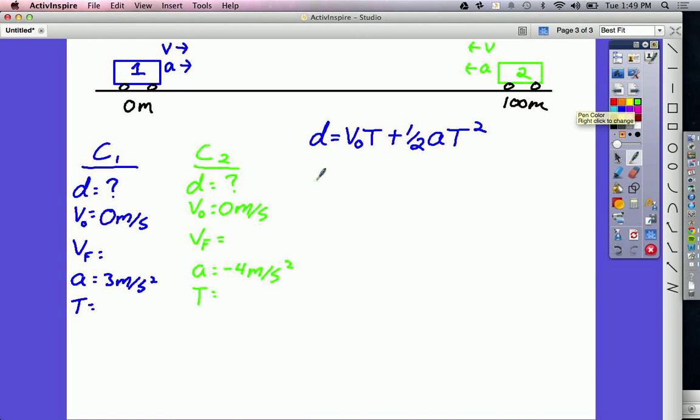And for car 2 is the exact same equation, only for the other car. Now, I'm using blue and green. You might want to write down little 1s and 2s next to your variables so that you know which is which.